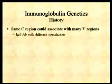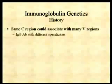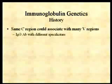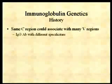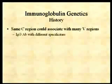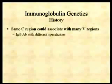When all this sequencing was going on — where people were sequencing the heavy chains and the light chains — one thing became very clear. The same constant region could be associated with many variable regions. For example, you could find IgG antibodies that had a lot of different specificities. So the same constant region that determined a gamma 1, gamma 2, or gamma 3 could be associated with a lot of different antibody specificities.